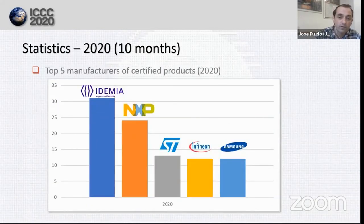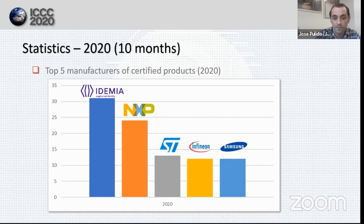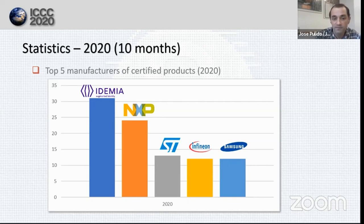This year we also bring the ranking of the top five manufacturers of Common Criteria certified products, and this year the first position was a surprise. Ibenia entered the podium straight to first position with 31 certified products — many congratulations to them. NXP is second with 24 certifications, having been in the top five during the last years. The bronze medal is for ST Microelectronics with 13 certifications. Following with 12 are Infineon and Samsung. This year, four of the usual top five have repeated in the list.